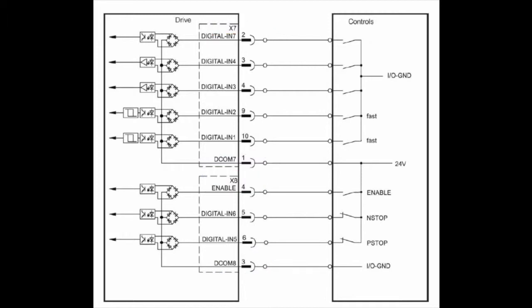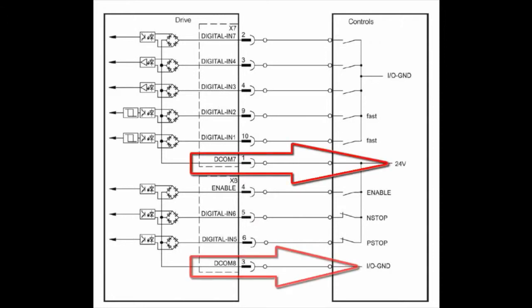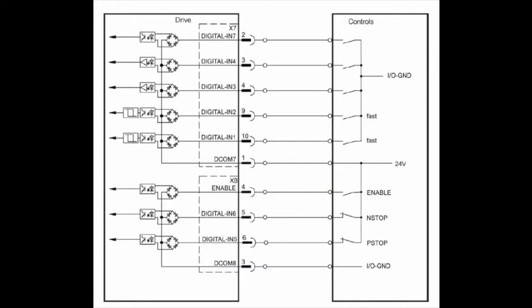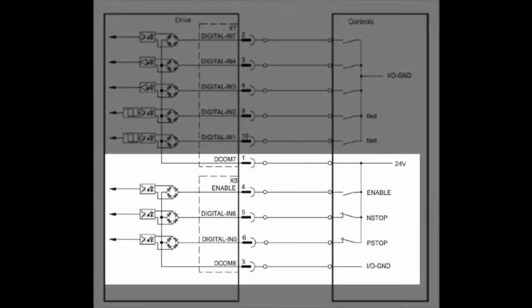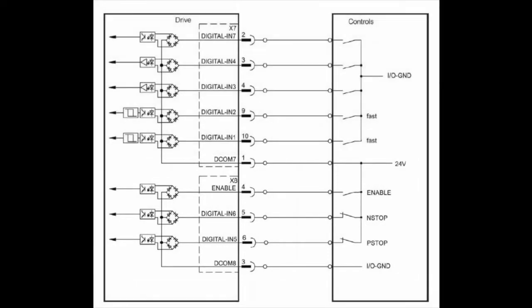In this scenario, X7 pin 1 will be connected to the positive side, and X8 pin 3 will be connected to the negative side. All of the inputs going into X7 will need to be connected to the negative side, and all of the inputs going into X8 will need to be connected to the positive side.